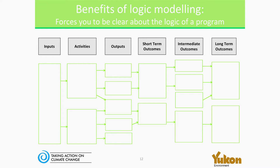During the design phase, when looking from left to right, you might see an activity or an output that isn't connected to the outcomes in the logic model. That could lead to questions about whether you are communicating all of the outcomes the program is hoping to achieve, or why the program should invest resources in that activity if it isn't linked to achieving what you're hoping to achieve. On the other hand, if you see an outcome that isn't supported by activities or outputs, you can ask questions about how you're expecting to achieve that outcome if there are no activities planned that might support it.